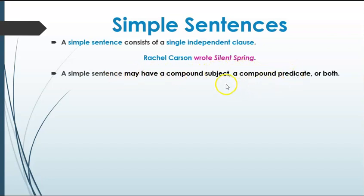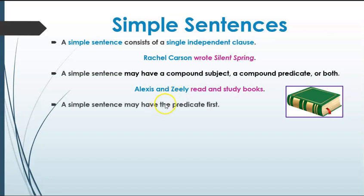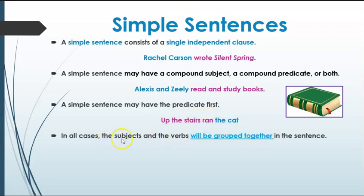A simple sentence may have a compound subject, a compound predicate, or both, and it's still a simple sentence. For example, 'Alexis and Zeely read and study books' — 'Alexis and Zeely' is the compound subject (two subjects), and 'read and study' is the compound predicate (two verbs). A simple sentence may also have the predicate first, such as 'Up the stairs ran the cat' — 'ran' is the verb and 'cat' is the subject. In all cases the subjects and verbs are grouped together, and the sentence can be divided in half.